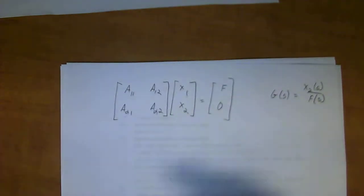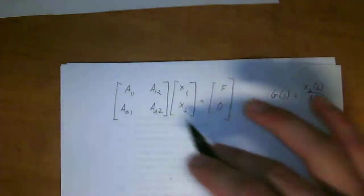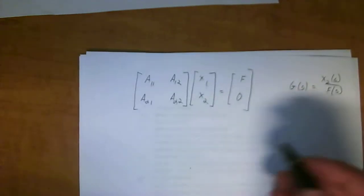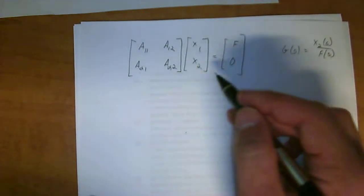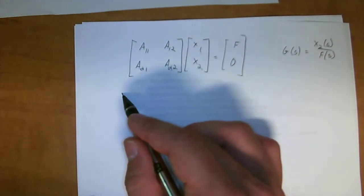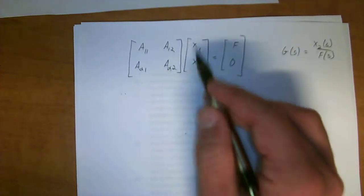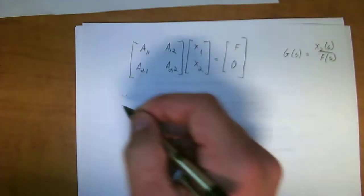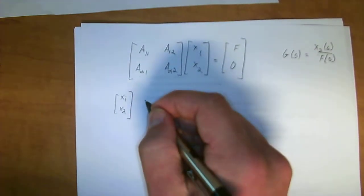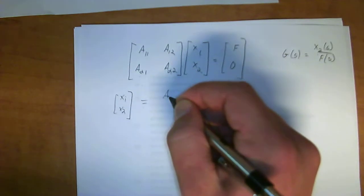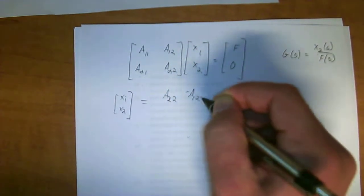So, we have a matrix, but we don't have what we want. Because remember, we're looking for the transfer function where g of s is equal to x2 of s all over f of s. So, we have to do some manipulation here, but you can't just divide a matrix and move something over to the other side. There's a little bit more that goes into it. So, what we do, if you know your matrix math and linear algebra, in order to move x1 and x2 onto the opposite side, so that we can solve for what x2 is, because we can't really separate it from everything else yet.